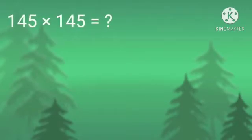1225. Multiply 145 by 145. Divide 145 into two parts. One part is the last digit, that is 5, and the other part is the number formed by the rest of the digits, that is 14.